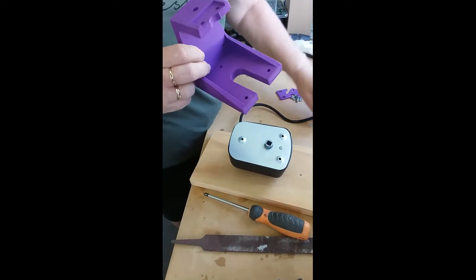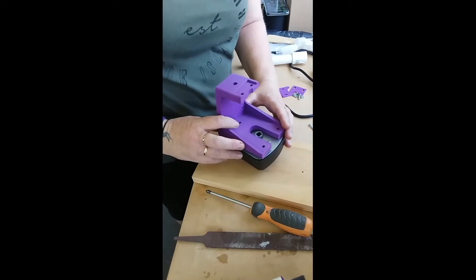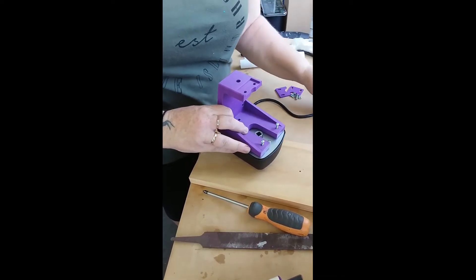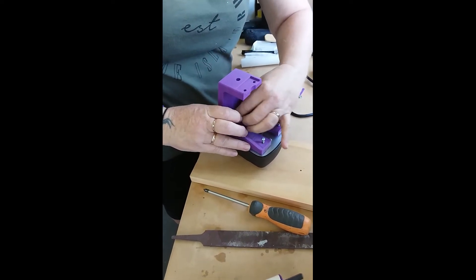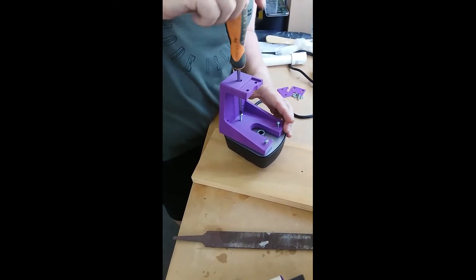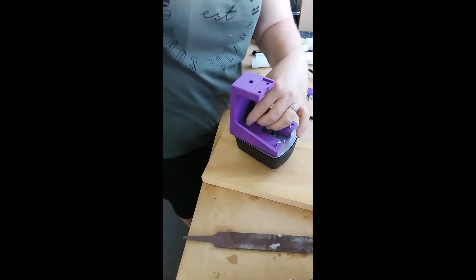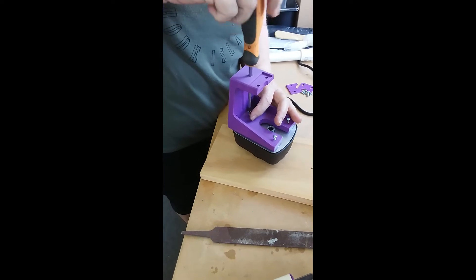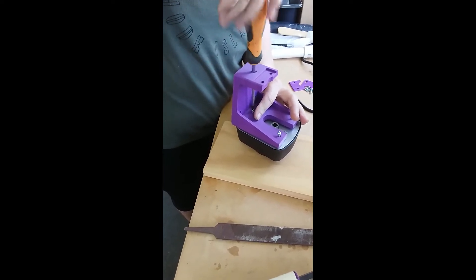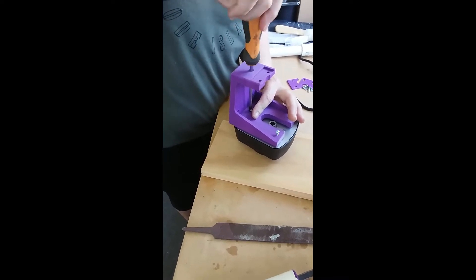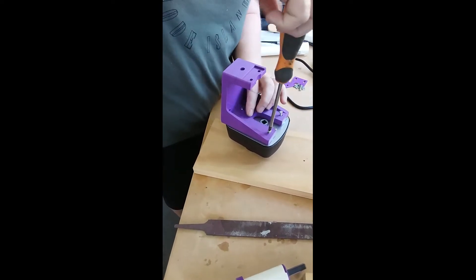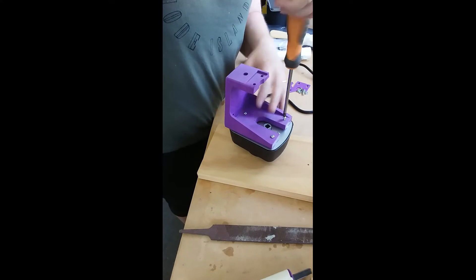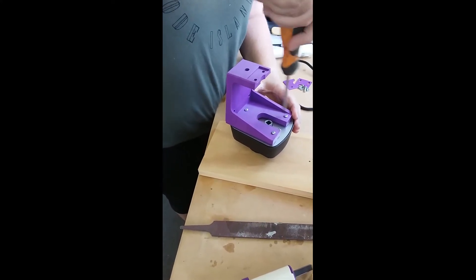So taking the thinner of the longer screws, you're going to line that up there and take the screwdriver and then just screw that in until it's tight. You don't want to make it too tight. You don't actually need to make it too tight. So I'm not even tightening that up I'm just going to the edge of the actual backing plate. So that's that on there.